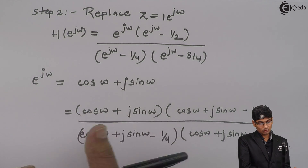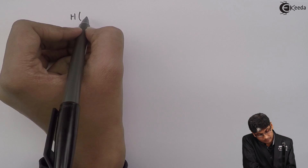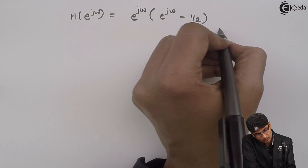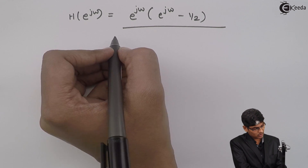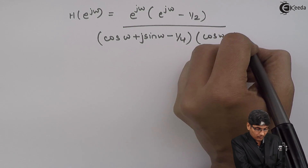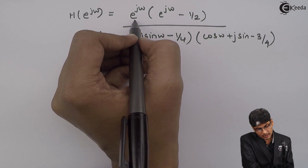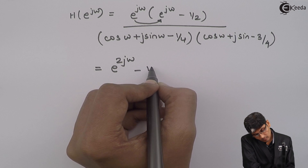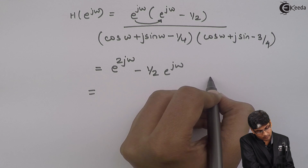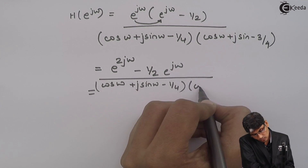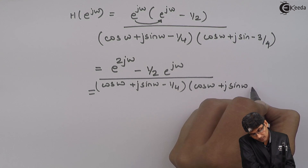The numerator becomes complicated if expanded directly, so let us rework it. Multiplying e^(jω) inside the numerator gives e^(2jω) - (1/2)e^(jω). Keeping the denominator as (cos(ω) + j·sin(ω) - 1/4)·(cos(ω) + j·sin(ω) - 3/4), this simplifies further calculations.